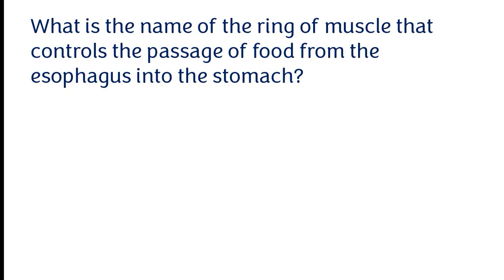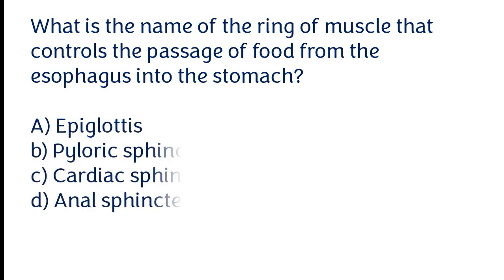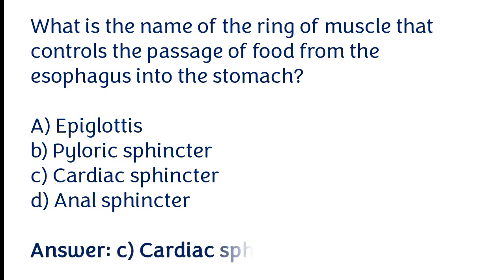What is the name of the ring of muscle that controls the passage of food from the esophagus into the stomach? Options: a) Epiglottis, b) Pyloric sphincter, c) Cardiac sphincter, d) Anal sphincter. The correct answer is option C. Cardiac sphincter.